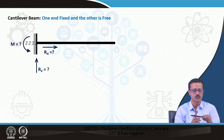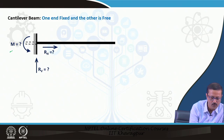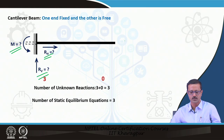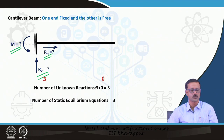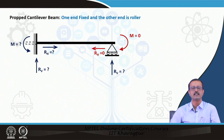A cantilever beam has one end fixed and the other end free. It has 3 unknowns at the fixed end and 0 at the free end, giving 3 unknowns total. With 3 equations of statics available, it is also stable and statically determinate.